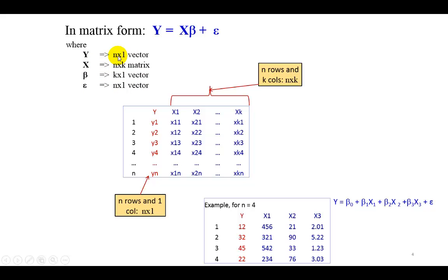Y as an N by 1 vector means it has N number of rows and one column. The row argument comes first and then column after. So in this example of four observations, we have Y as a 4 by 1 vector.